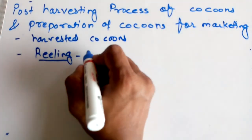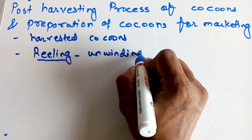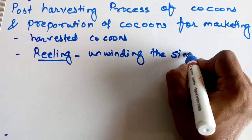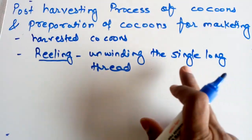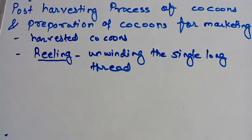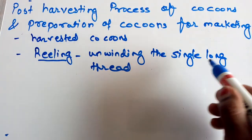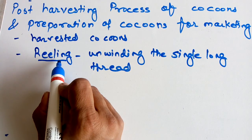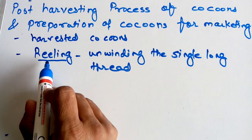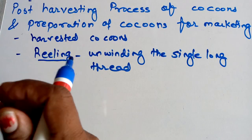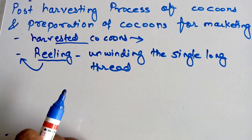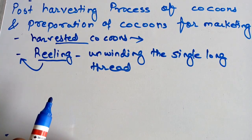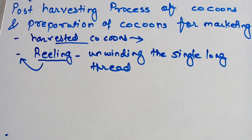In the process of reeling, we unwind a single long thread from the cocoon — that is called reeling. But we do not go directly towards reeling. Before reeling and after harvesting of the cocoon there are many steps: stippling, drying, storing, cooking, boiling, and degumming, and then reeling.